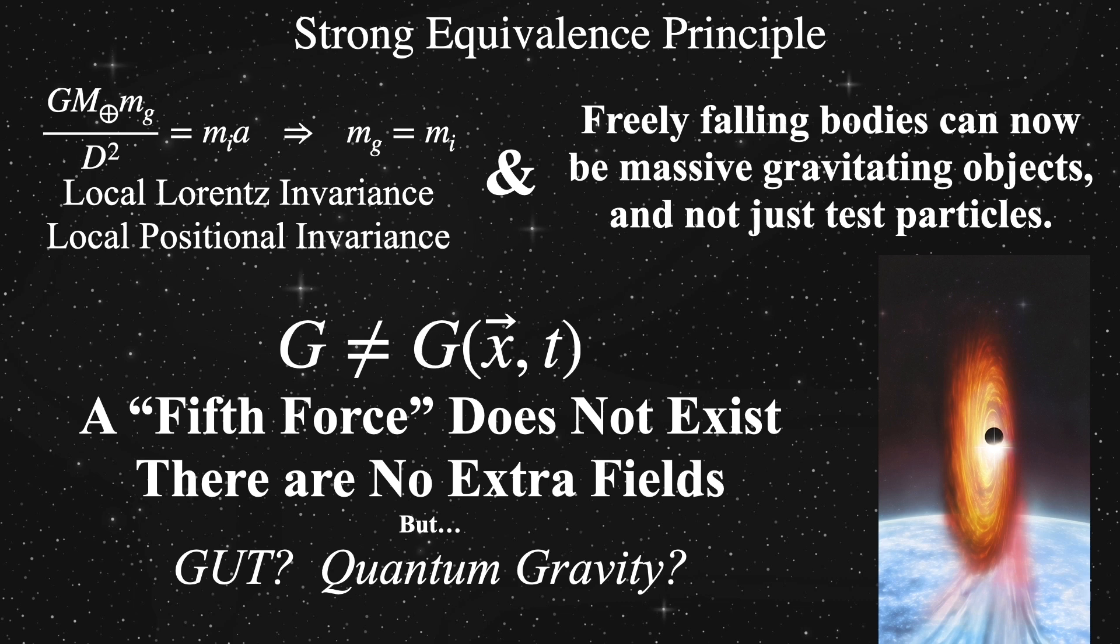For this purpose, the strong equivalence principle, in order to have gravitational interactions explicitly obey the universality of freefall, local Lorentz invariance and local positional invariance, creates the strongest possible restrictions on theories of gravity. Namely, the strong equivalence principle requires that the gravitational constant be the same everywhere and every when in the universe.